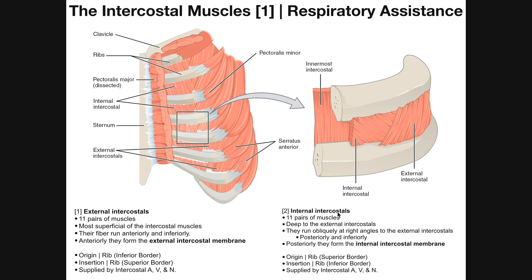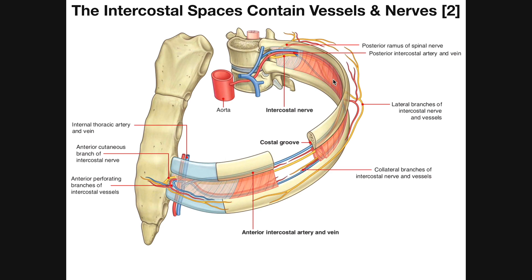These two muscles — external and internal intercostals — are supplied by the intercostal nerve, the intercostal artery, and vein. Those vessels and nerve travel in the intercostal space. For example, in the fourth intercostal space, the fourth external and fourth internal intercostal muscles would be supplied by the fourth intercostal artery, fourth intercostal vein, and fourth intercostal nerve. We'll talk about those vessels and nerves in more detail in one of the next videos.